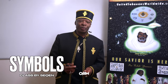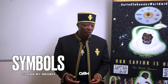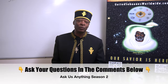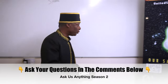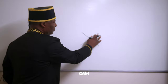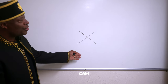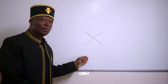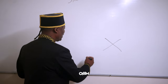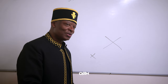Symbols are very important because a picture tells a thousand words. If I put an X on the board, what would you say that represents? An X, right. What words do you use when you use the word X?